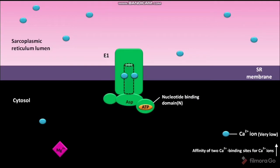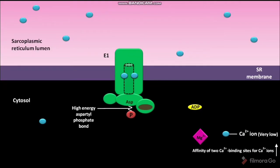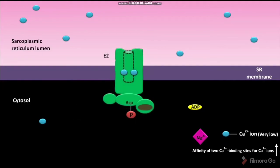Cytosolic magnesium ion then binds to the ATP. The ATP then undergoes hydrolysis to produce ADP and a phosphate group. The phosphate group is transferred to a specific aspartate amino acid in the phosphorylation domain. The magnesium ion is then released to the cytosol. A high-energy aspartyl phosphate bond can be found between the transferred phosphate group and the aspartate amino acid in the phosphorylation domain. The P-class CA2+ ATPase pump then changes its conformation from E1 to E2 with two bound calcium ions.